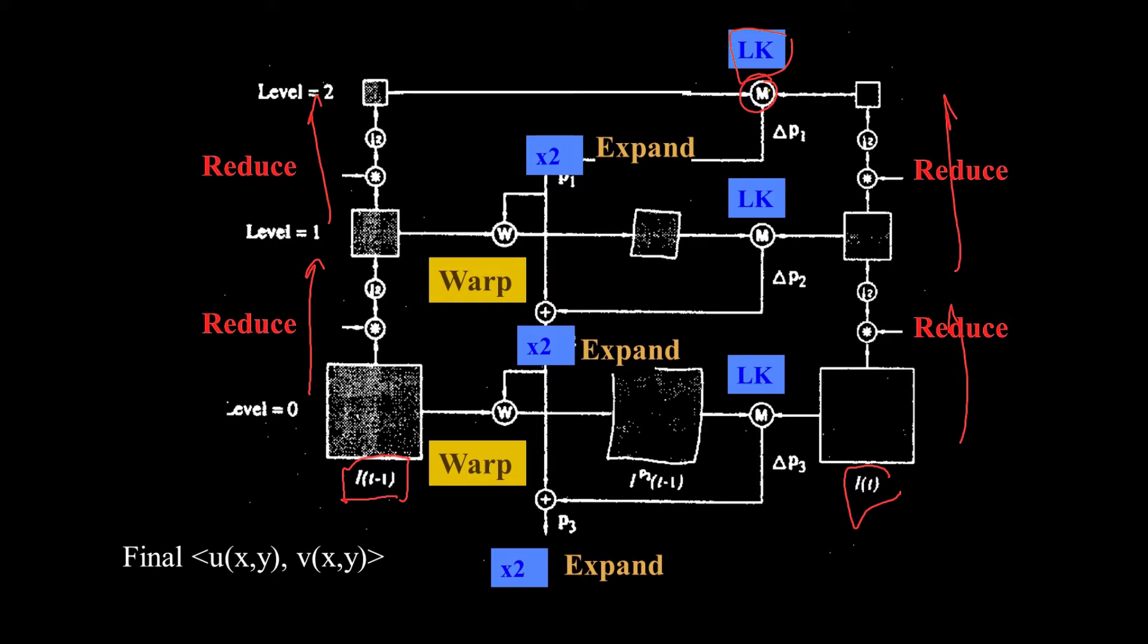And that gives us a flow field. And what we do is we make, and that tells you how every pixel moves. We double up and multiply by two that flow field. And then we apply that to the next level down. And then there's this funny function called warp.